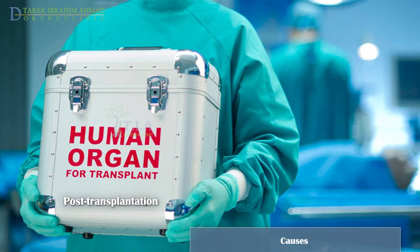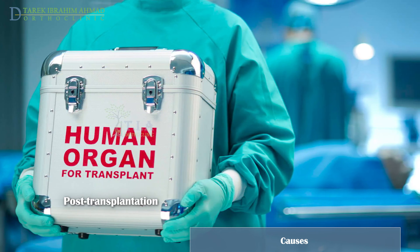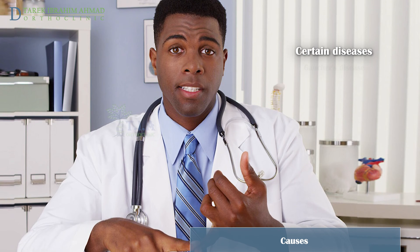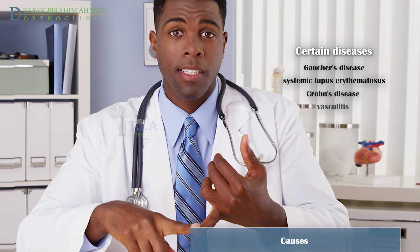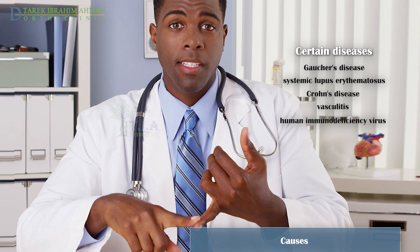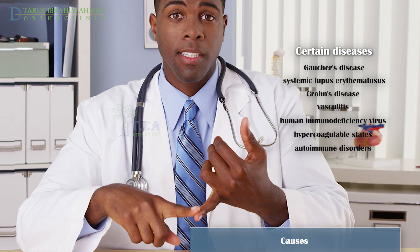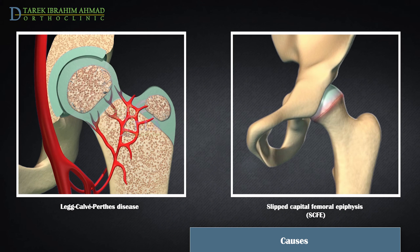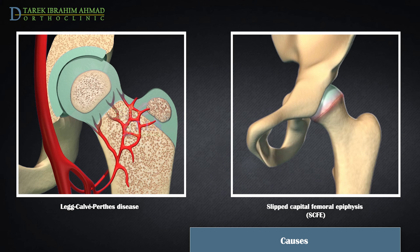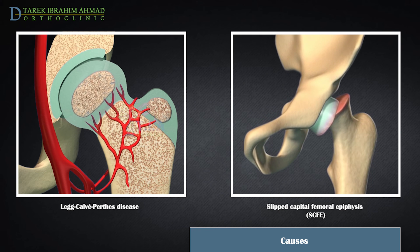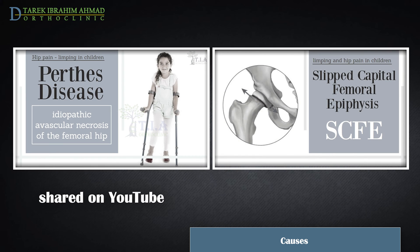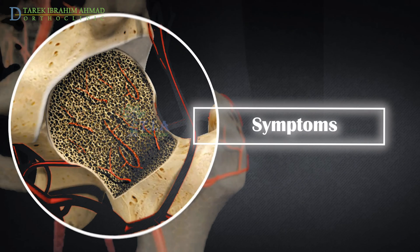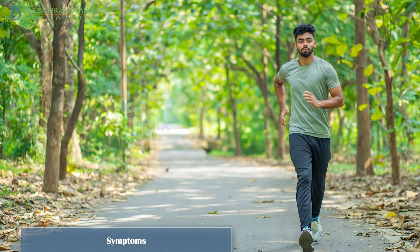Osteonecrosis has been reported to occur in approximately 5 to 20 percent of renal transplantation patients. Medical conditions such as Gaucher's disease, systemic lupus erythematosus, Crohn's disease, vasculitis, HIV, hypercoagulable states, and autoimmune disorders are also associated. Two types of osteonecrosis are limited to children: idiopathic osteonecrosis of the femoral head (Perthes' disease), and osteonecrosis occurring in adolescents with a slipped capital femoral epiphysis.